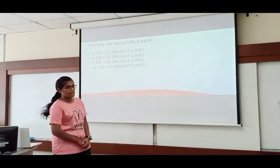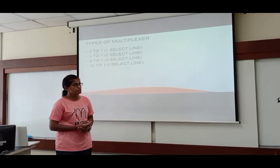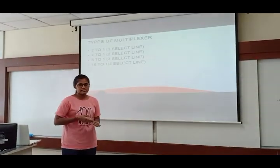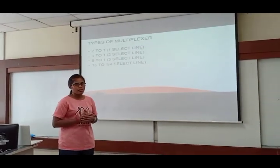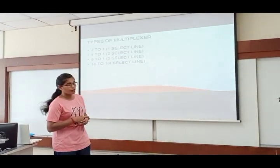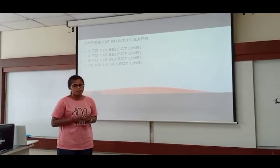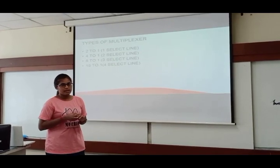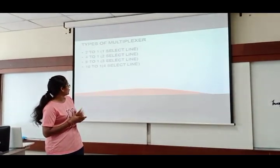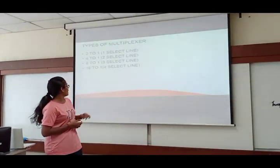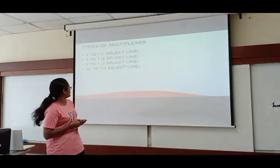Let's discuss about the types of multiplexer. Multiplexer has four types, which is 2 to 1 multiplexer, which means 2 inputs and 1 output and 1 selector, and then 4 to 1 multiplexer, which has 4 inputs and 1 output and 2 selectors. Then 8 to 1 and 16 to 1. 8 to 1 we have 8 inputs and 16 to 1 we have 16 inputs.